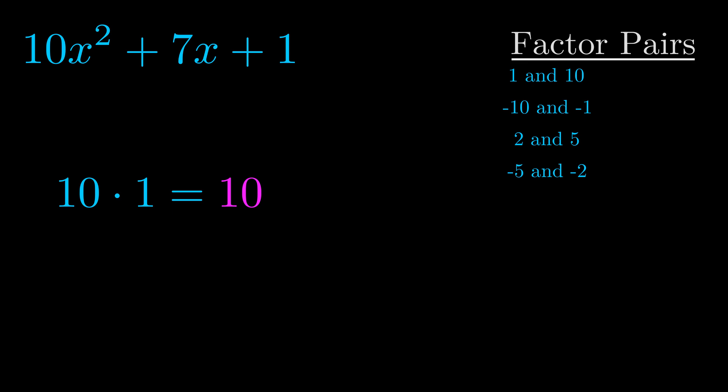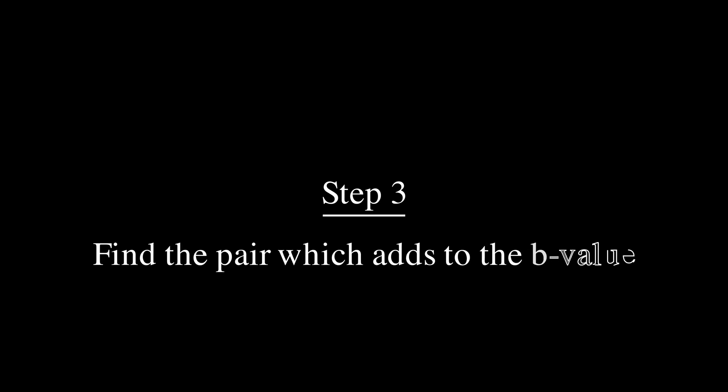Now once you have these factor pairs, the goal is to find which of these pairs adds to the b value. The b value is the coefficient on the x term.